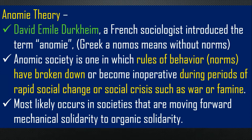When the accepted behaviors, conduct, and practices of a given society are no longer followed, there is now anomie — there is no more observance of traditional and conventional social norms. An anomic society is one in which the rules of behavior have broken down or become inoperative during periods of rapid social change or social crisis such as war or famine. For example, in the Philippines, the pandemic created social change — we can no longer do the normal things we did before the pandemic.